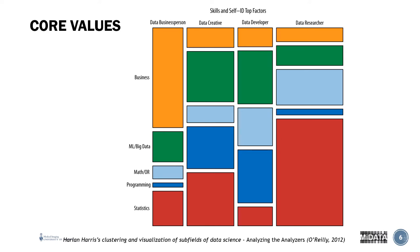The data researcher is probably the easiest to start with — it's the more classic description of a scientist. From a skill perspective, business is one of the smaller components, along with programming. The data researcher spends more of their time in statistics, as well as math, and a bit less in machine learning and big data.